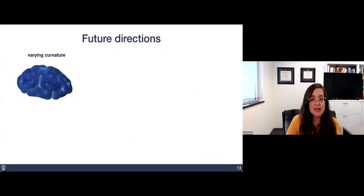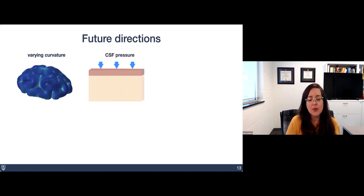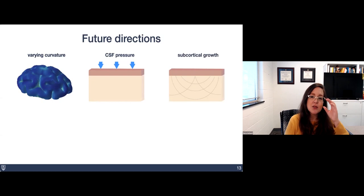So in the future, what we'd like to do is experiment with changes in curvature, the gross curvature of the domain, the simulation domain. In the brain, you see regions of different curvature, including even local regions of concavity, and so that would be really interesting to explore. We have evidence, we've actually published, showing that CSF pressure changes the instability behavior of the brain, and so presumably that might also affect cortical thickness differences. We'd also like to include subcortical growth, which plays a really important role in cortical folding as well.